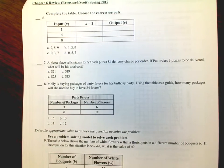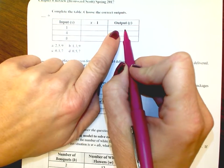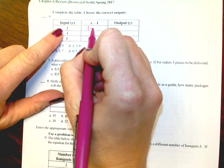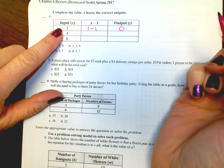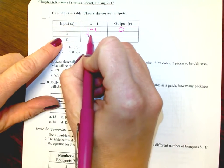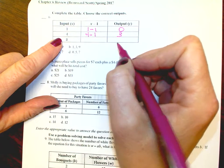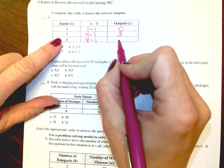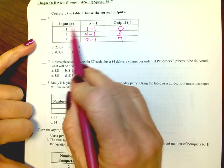Number 6: Complete the table — choose the correct output. They give you the formula, and you substitute each x value. If x equals 1: 1 minus 1 equals 0. If x equals 4: 4 minus 1 equals 3. If x equals 8: 8 minus 1 equals 7. Your answer is C.